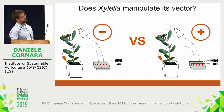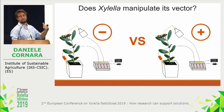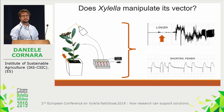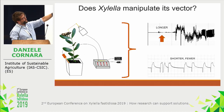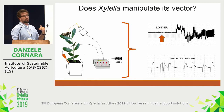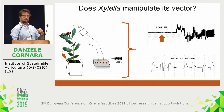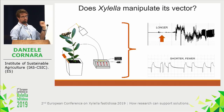We performed EPG of Xylella-negative Philaenus and Philaenus infected with Xylella on healthy olive plants. There is a statistically significant difference: Philaenus infected with Xylella perform longer non-probing behavior — the stylets are out of the plant for a longer time. And when probing, they feed less than a negative Philaenus, performing shorter and fewer xylem ingestions.